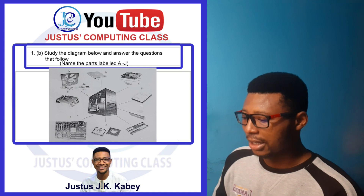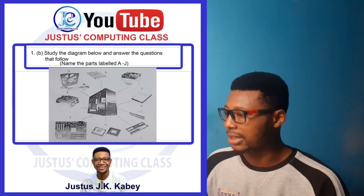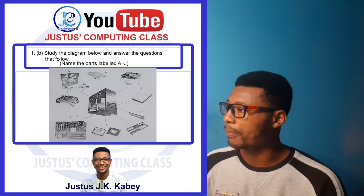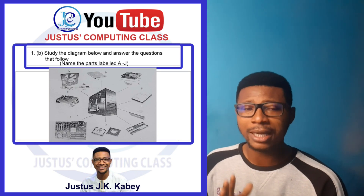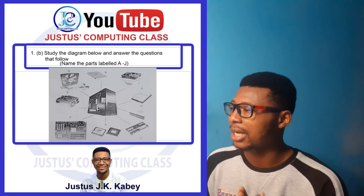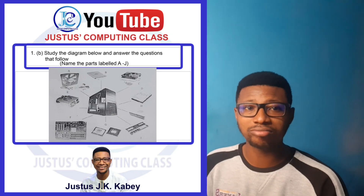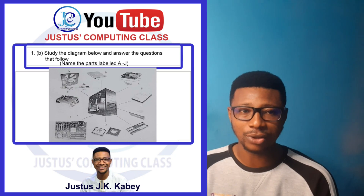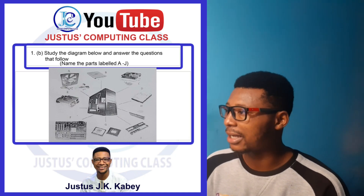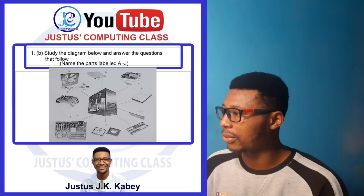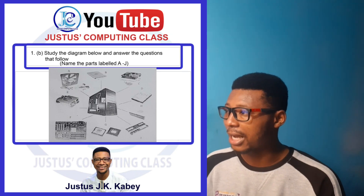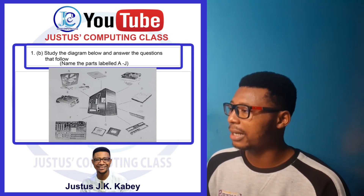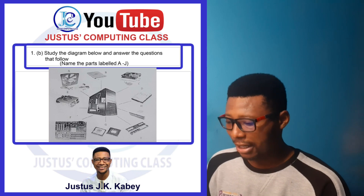Part label B is the floppy disk. Even though the image is not too clear, please try to search for pictures close to the answers I'm giving you. Part label C is the heat sink.